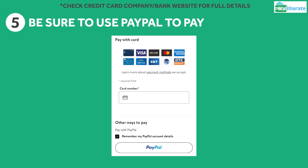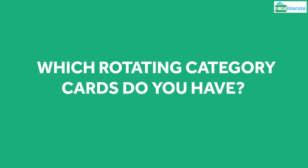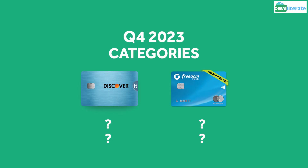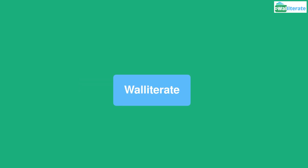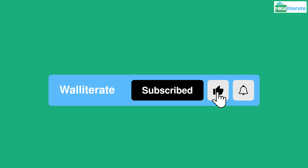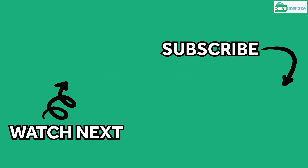If you use those cards directly, you will not earn the 5% back, as you won't be paying with PayPal. Which rotating category cards do you have right now? Let me know in the comments. If you enjoyed this video, you may be interested in this video next, where we go over the 5% cashback categories for these cards for Q4, including important exclusions to keep in mind. If you found this video helpful, it'd be a huge help if you could click like and subscribe if you haven't yet. Thanks for watching and see you next time!